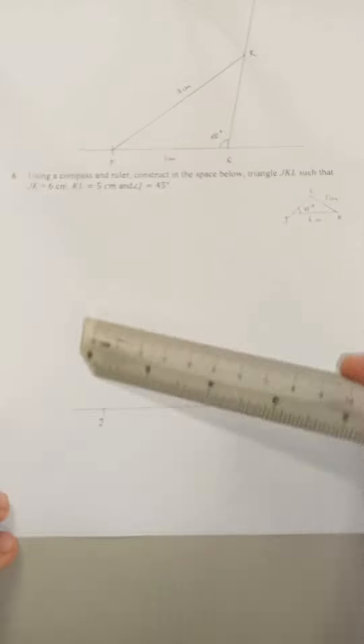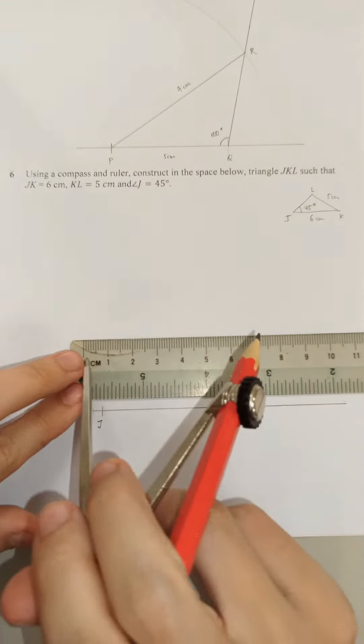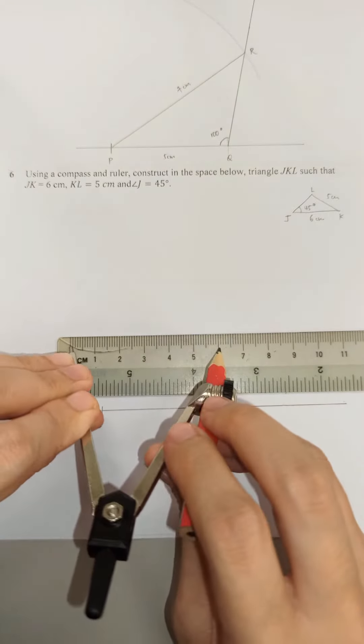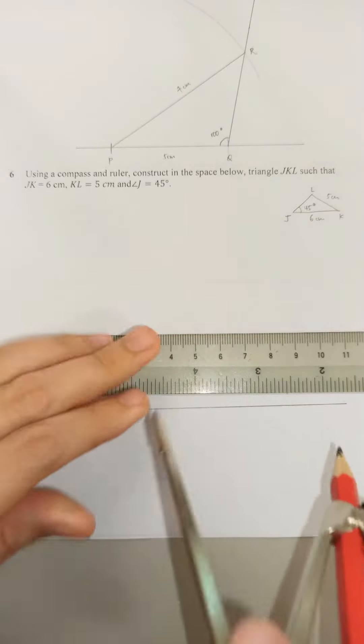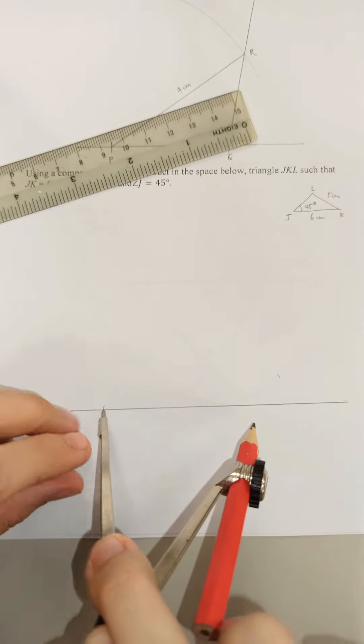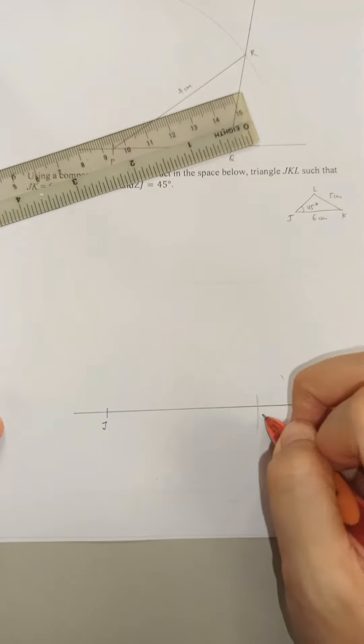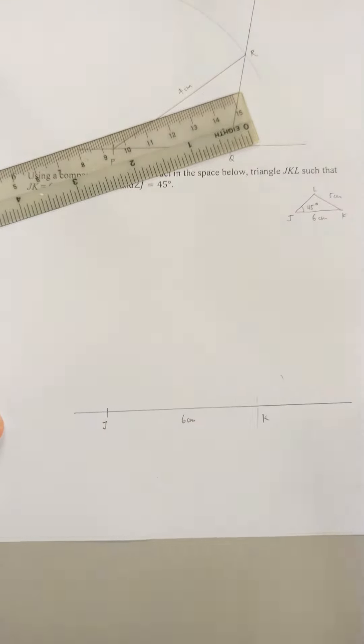We would like K to be 6 cm away. So let's put this at 6. Needle at 0, pencil at 6. So needle at J, pencil. It's going to mark out K. And this is 6 cm away from J.